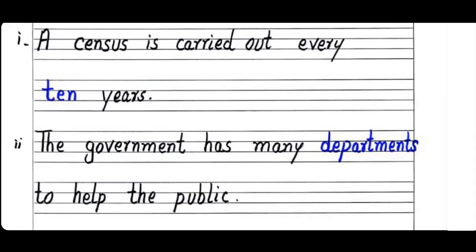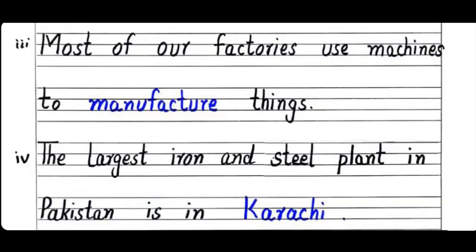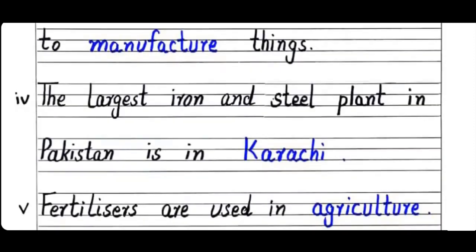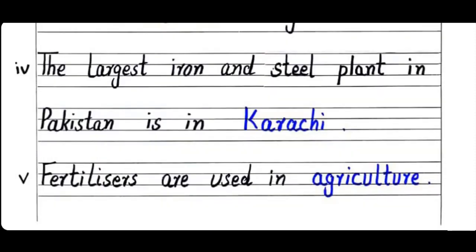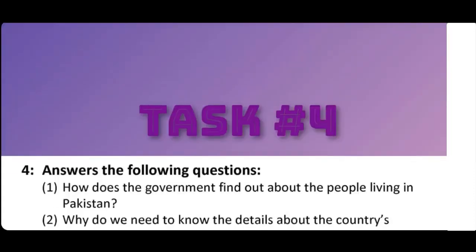Task Number 3 - Fill in the blanks. Number 1: A census is carried out every 10 years. Number 2: The government has many Departments to help the public. Number 3: Most of our factories use machines to Manufacture things. Number 4: The largest iron and steel plant in Pakistan is in Karachi. Number 5: Fertilizers are used in Agriculture.